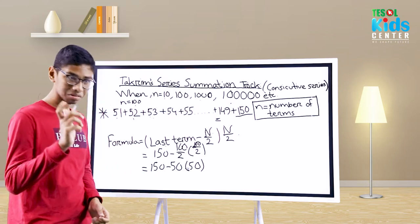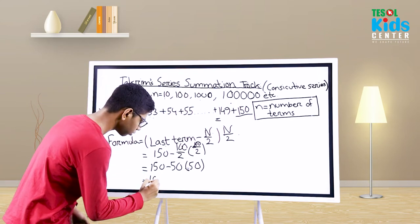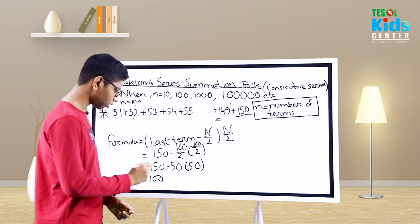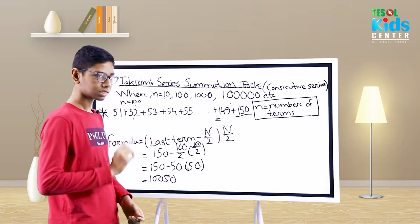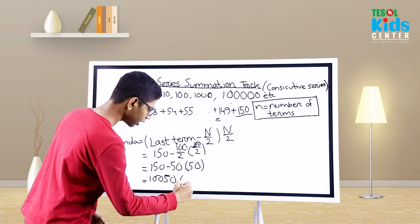Now 150 minus 50 equals 100. We will write 50 here, because in the bracket we will write it in the extreme right, and that's our answer.